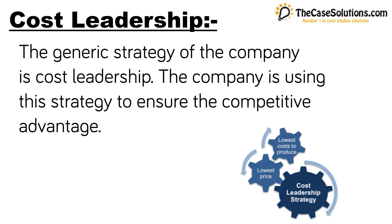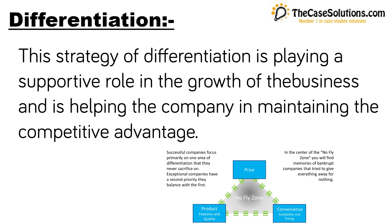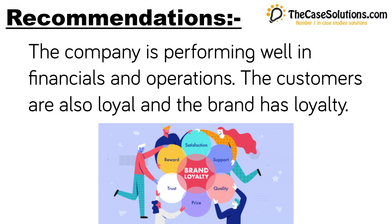Under Porter's generic model, the company's generic strategy is cost leadership. IBM uses this strategy to ensure competitive advantage through cost effectiveness in its operations, with the cost difference from competitors enabling the company to maximize its selling price. Additionally, the differentiation strategy plays a supportive role in business growth and maintaining competitive advantage. At the start, the company mainly focused on differentiation; the uniqueness of the products created value for customers, with a focus on specific market segments.